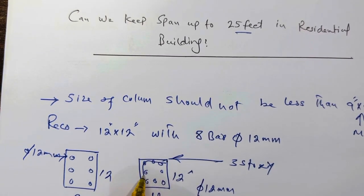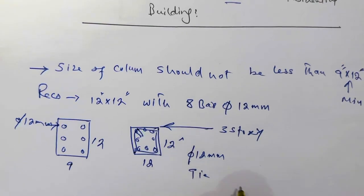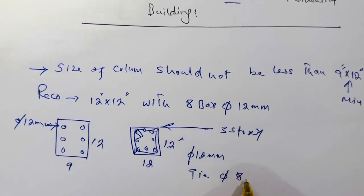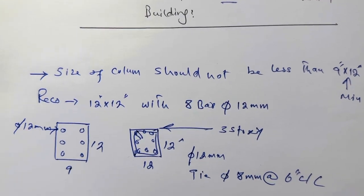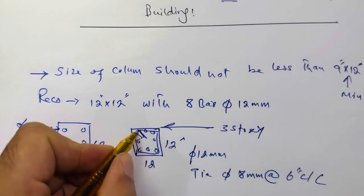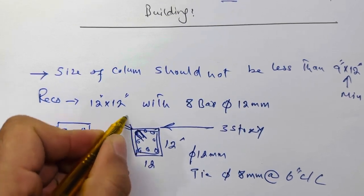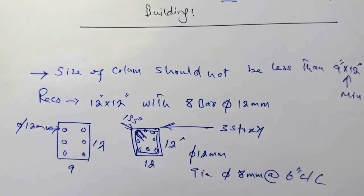And you can see this is the tie. The tie diameter should be 8 millimeter with the spacing of 6 inches center to center. Next, these hooks should be bent on 135 degree angle or degree.